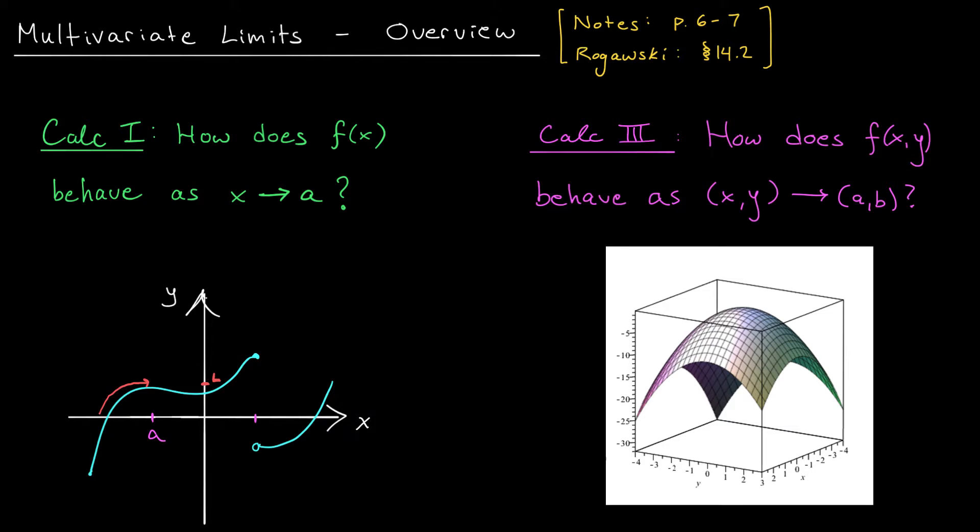If instead we come in from the only other possible way, from the right, well, it looks like our function is again approaching that same y value. In this case, since the behavior of the function is the same no matter which path we take to x equals a, we say that the limit as x goes to a of f(x) exists and is equal to L.